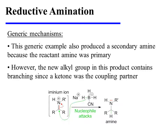This generic example also produced a secondary amine because the reactant amine was primary. Notice that in the product, the nitrogen atom is directly bonded to only two other carbons, and that's why it's a secondary amine. However, it is true that the new alkyl group in this product contains branching, since the ketone was the coupling partner.